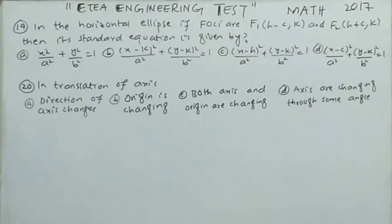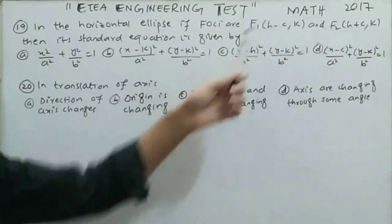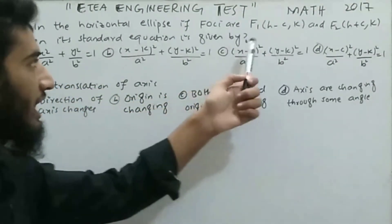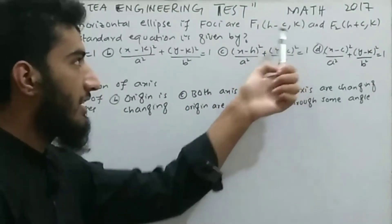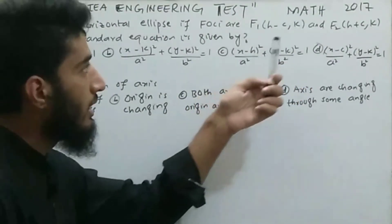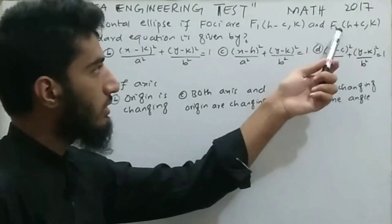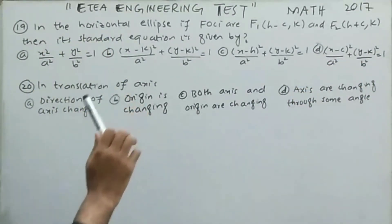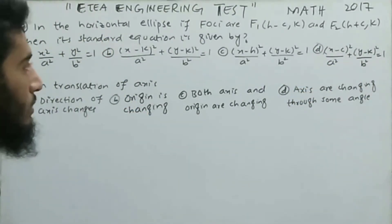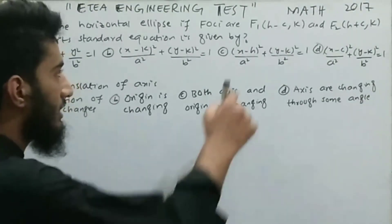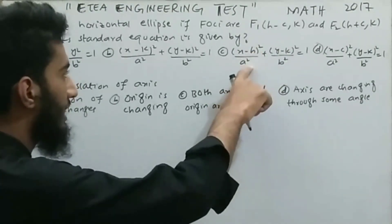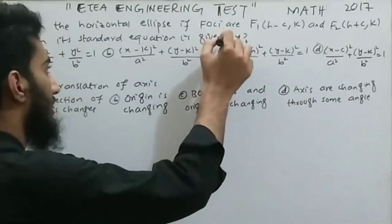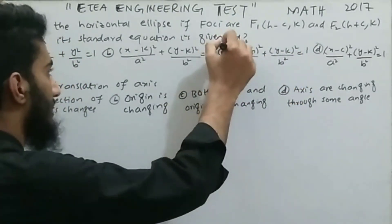MCQ number 19: for a horizontal ellipse with foci at (h−c, k) and (h+c, k), the standard form of the ellipse equation is (x−h)² / a² + (y−k)² / b² = 1. The correct option for this MCQ is option number C.